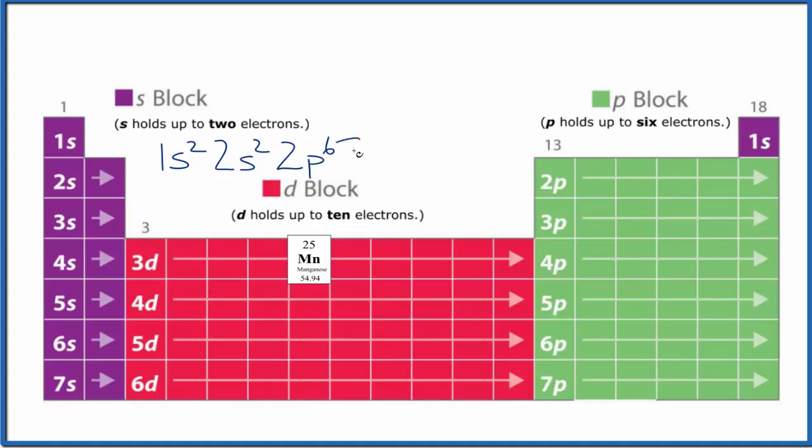Then to the third energy level, 3s², 3p⁶. Then we're down to the fourth energy level, 4s². Let's give ourselves a little more room. And then we're in the d, we go 1, 2, 3, 4, 5, 3d⁵. And if you add all these numbers up, they add up to 25. That's manganese.